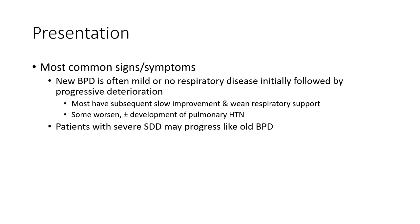Presentation: most common signs and symptoms. New bronchopulmonary dysplasia is often mild or no respiratory disease initially, followed by progressive deterioration. Most have subsequent slow improvement and wean from respiratory support. Some develop pulmonary hypertension. Patients with severe surfactant deficiency disease may present with crash-like bronchopulmonary dysplasia.